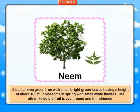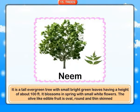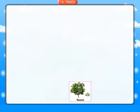Neem: it is a tall evergreen tree with small bright green leaves, having a height of about 100 feet. It blossoms in spring with small white flowers. The olive-like edible fruit is oval, round and thin-skinned.